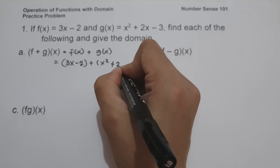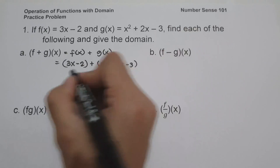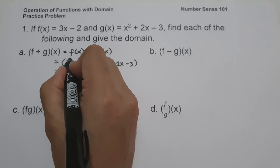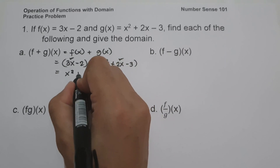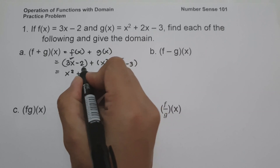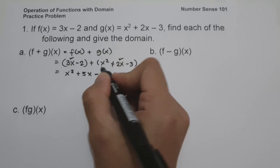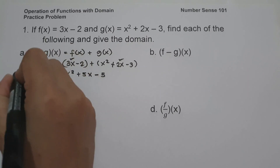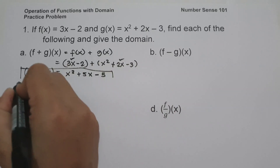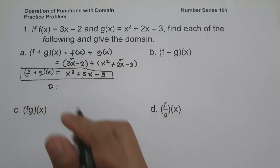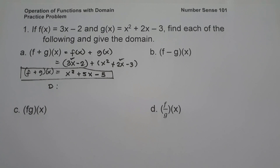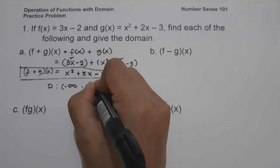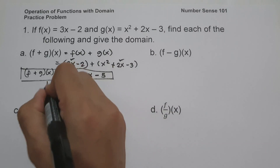Combining like terms: x², then 3x + 2x = 5x, and −2 − 3 = −5. So (f+g)(x) = x² + 5x − 5. To find the domain: whenever you have a linear, quadratic, or any polynomial function, the domain is from negative infinity to positive infinity.